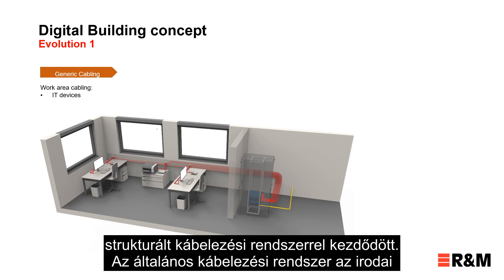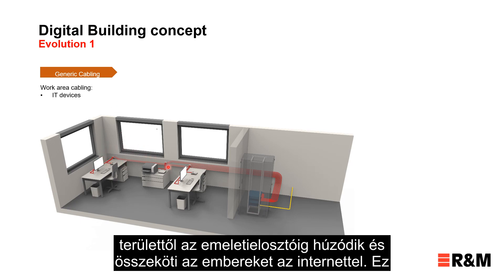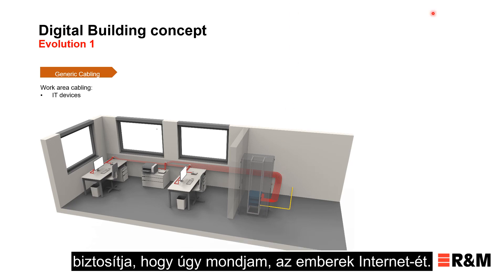The generic cabling system runs from the workspace up to the floor distributor and connects people to the internet — providing, so to say, the internet of people.